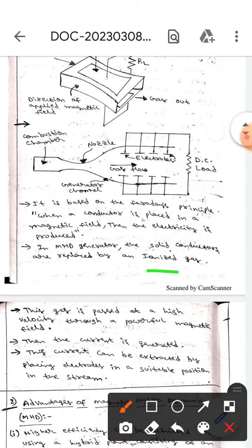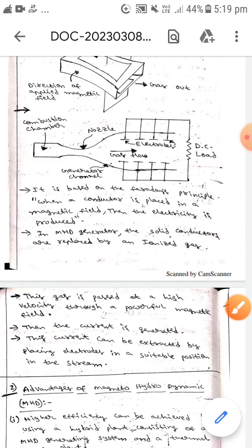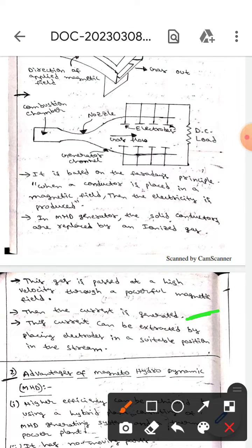Whereas in MHD generator, the solid conductors are replaced by an ionized gas. This gas is passed at a high velocity through a powerful magnetic field. Then the current will be generated. This current can be extracted by placing electrodes in a suitable position.